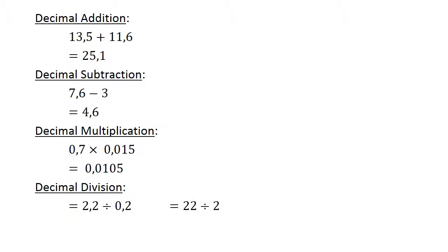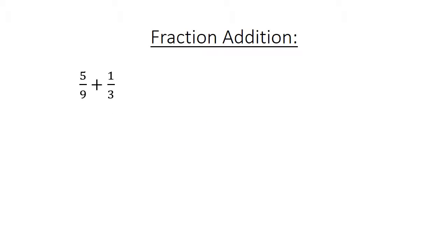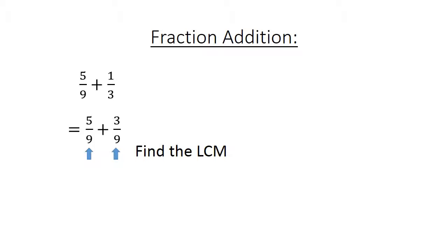Decimal Division: 2,2 divided by 0,0105. We multiply both with 10 to get whole numbers: 22 divided by 2 equals 11. Fraction Addition: 5 over 9 plus 1 over 3 equals. Find the lowest common multiple: 5 over 9 plus 3 over 9 equals 8 over 9.